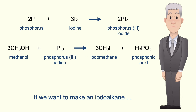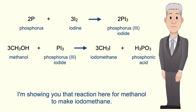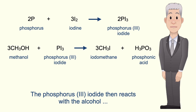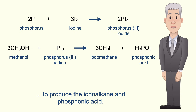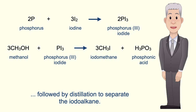If we want to make an iodoalkane, we can react our alcohol with red phosphorus and iodine — shown here for methanol to make iodomethane. The phosphorus reacts with the iodine to form phosphorus(III) iodide, which then reacts with the alcohol to produce the iodoalkane and phosphonic acid. This reaction is carried out by heating under reflux, followed by distillation to separate the iodoalkane.